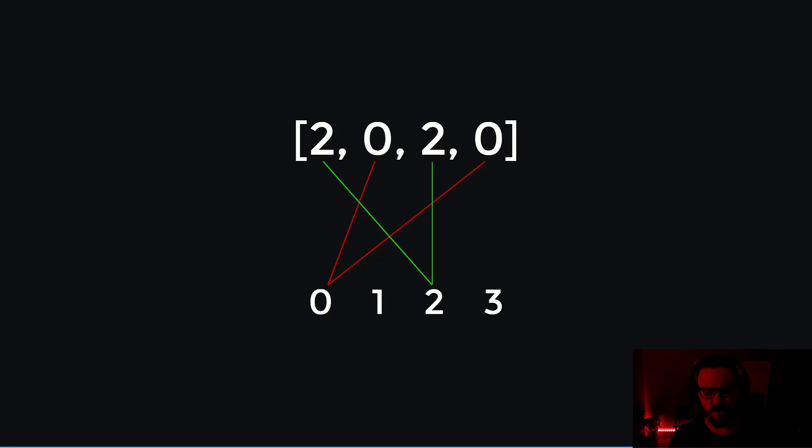Then we get to the two position or the two index, and its correlating value is two. So that tells us that there are two twos in this number. And so you can see those green lines pointing to the first two and the second two. That confirms that there are two twos.